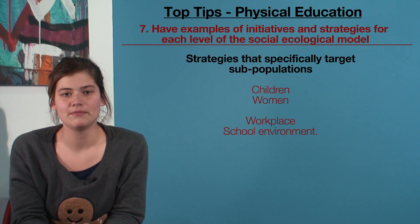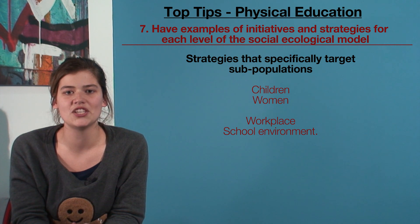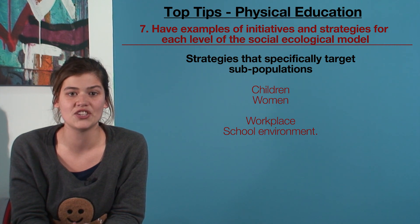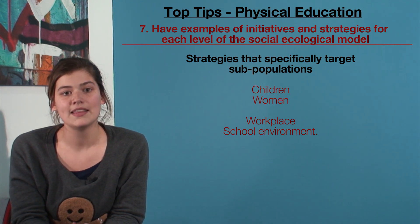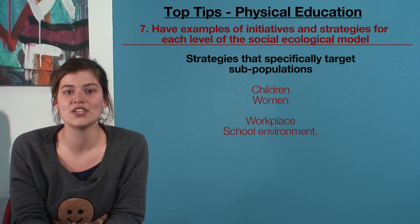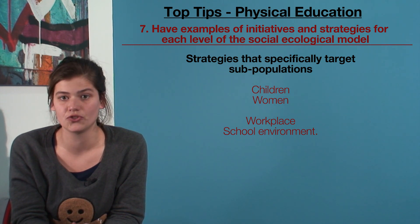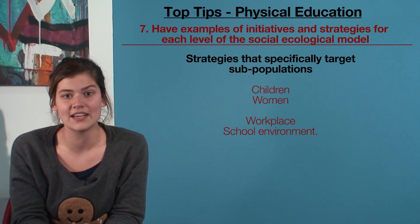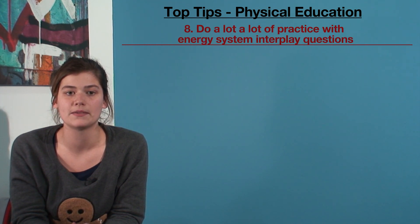Tip 7: students should make sure they have examples of initiatives and strategies for each level of the social ecological model. This may include strategies that specifically target subpopulations such as children, women, or areas such as the workplace or school environment.